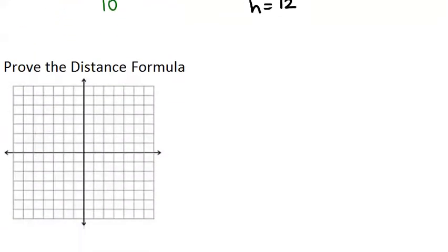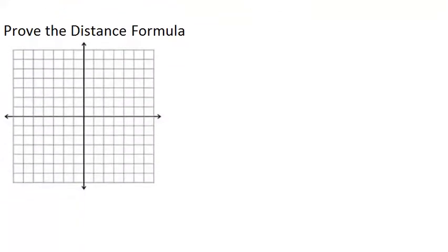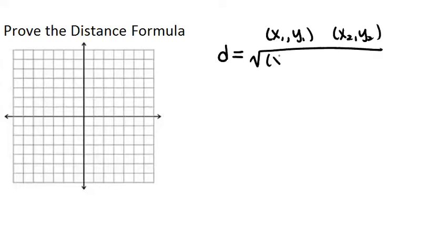Another application of the Pythagorean Theorem is it can help you to prove or derive the distance formula. Remember that the distance formula says that the distance between any two points x1y1 and x2y2 is the square root of x2 minus x1 squared plus y2 minus y1 squared.